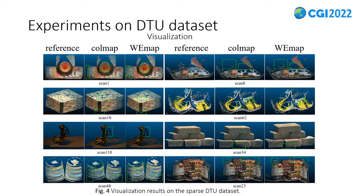In order to verify the effectiveness of VMAP, extensive experiments were conducted. Figure 4 shows the comparative results on the sparse DTU dataset. To simulate a sparse image sequence, we remove approximately one third of the images from each scenario, generating a sparse version of the DTU dataset. For each scan, the point cloud is reconstructed by CoreMAP on the original dense image sequences, then by CoreMAP on the sparse image sequences, and then by VMAP on the same sparse image sequences, displayed from left to right. It can be observed from the regions in the green bounding boxes that there are many missing details in the CoreMAP results, whereas our VMAP can preserve those details.